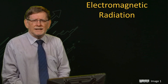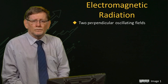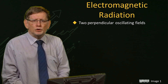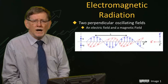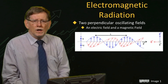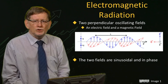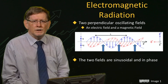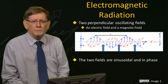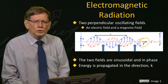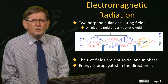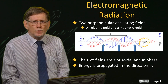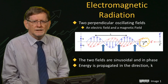So, what is electromagnetic radiation? It consists of two perpendicular fields — an electric field and a magnetic field. The two fields are sinusoidal and in phase, which means that as they oscillate they both pass through zero at the same point in time. The energy moves or propagates in the direction K, which is perpendicular to the two oscillating fields.